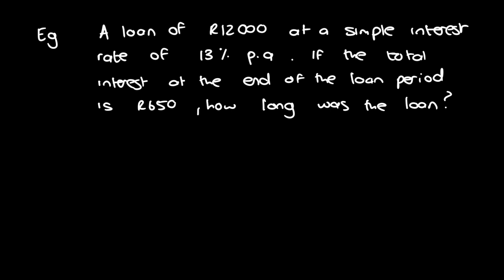So next up, we have an example which says we have a loan of 12,000 rand at a simple interest rate of 13% per annum. If the total interest at the end of the loan period is 650 rand, how long was the loan? So again, we're just going to start off with, well, we know it's simple interest. So we have the future value is equal to the present value 1 plus i n. And then we have the case of asking for how long is the loan? So it would be, if we just followed it straight like this and didn't think about anything, future value, present value minus 1 divided by i.